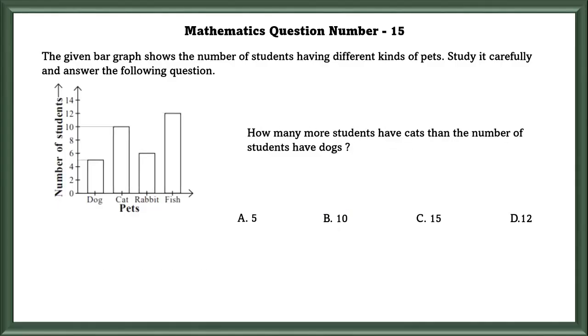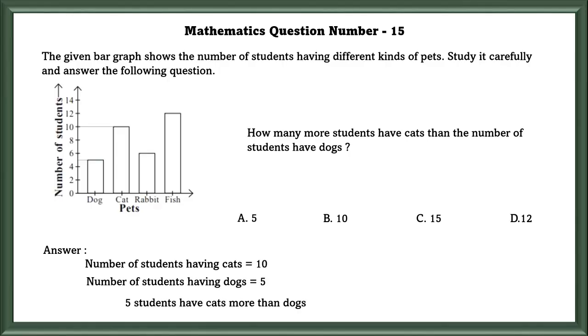Question No. 2: How many more students have cats than the number of students have dogs? Number of students who have cats is equal to 10. Number of students who have dogs is equal to 5. So if we subtract them, we'll get 5 students which have cats more than dogs.